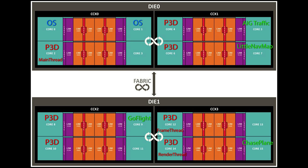Moving on to the actual die layout of cores — this is for the AMD 5950X processor and shows its core layout. Your CPU may have a different layout, and you can stagger the cores as you like to optimize heat distribution. This is a map of how the threads are actually being mapped to each individual core. The Prepar3D main thread is on core 2, the Prepar3D frame thread on core 12, the Prepar3D render thread on core 14, AIG is mapped to core 5, the nav map to core 7, GoFlight to core 9, and Chase Plane to core 15.